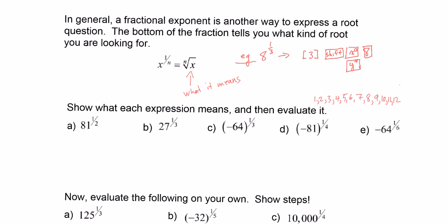For the first one, 81 to the 1 half, we write this in radical form to show what the expression means. In my head I'm thinking: what number squared equals 81? That number is 9. For 27 to the 1 third, we write it in radical form immediately — the third root of 27. What number times itself 3 times gives 27? That number is 3.